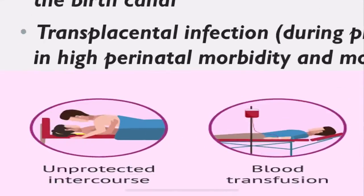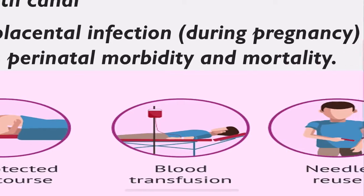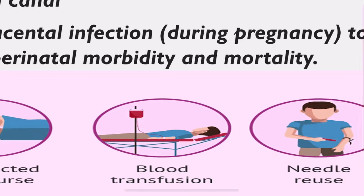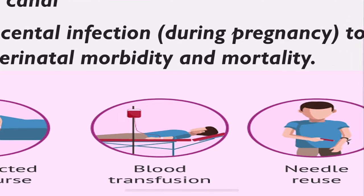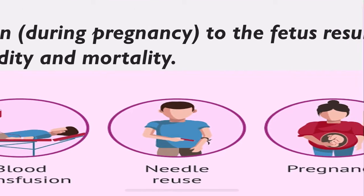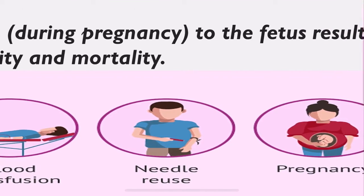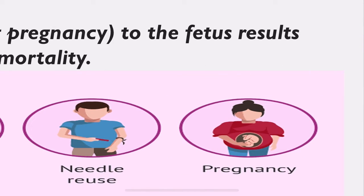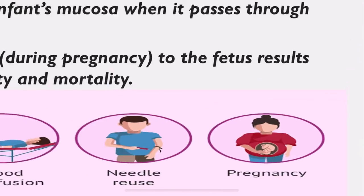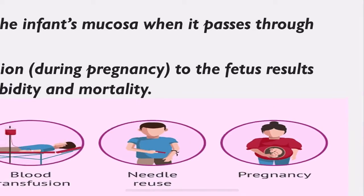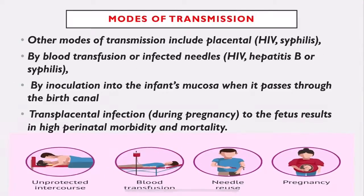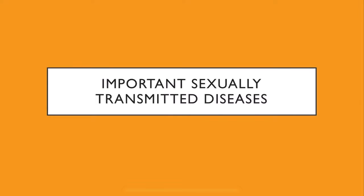Modes of transmission include bisexual contact, blood transfusion from an infected person, unsterilized needles containing the blood of an infected person, and pregnancy. If the woman is suffering from HIV, even the baby can suffer, as the HIV virus can transfer from the placenta to the fetus.